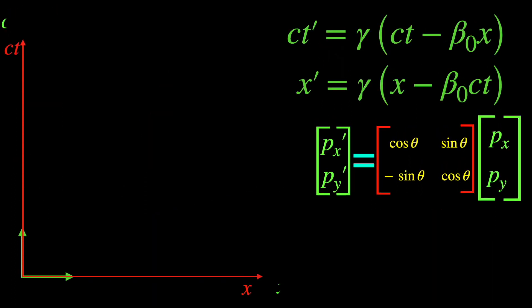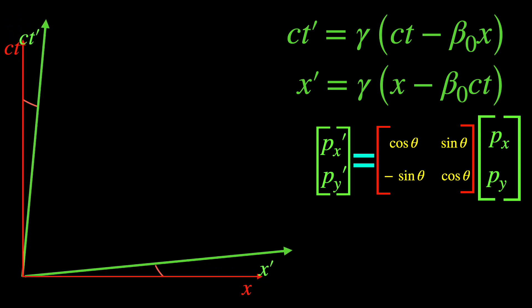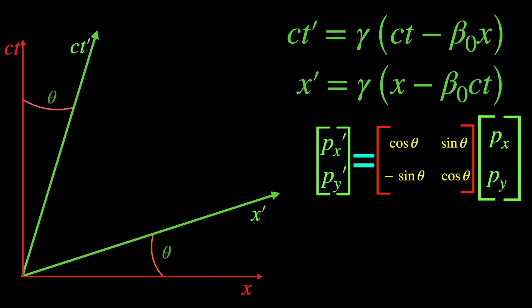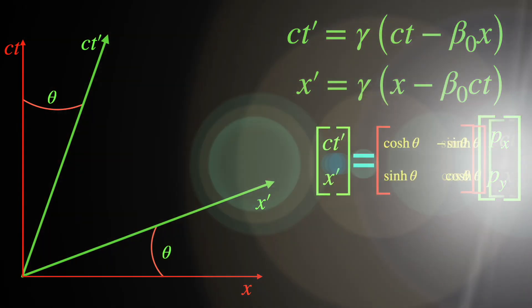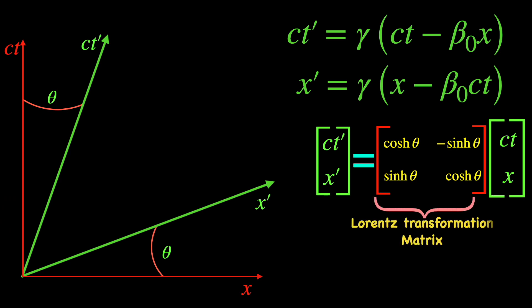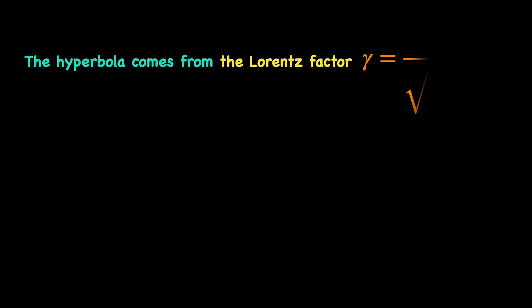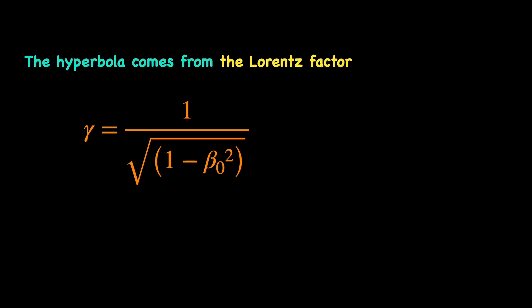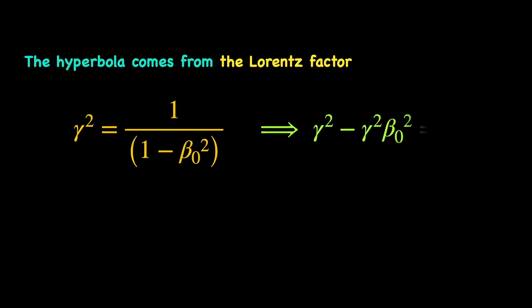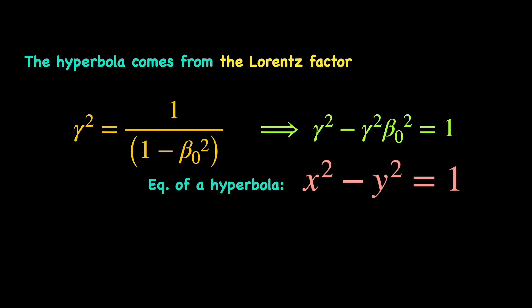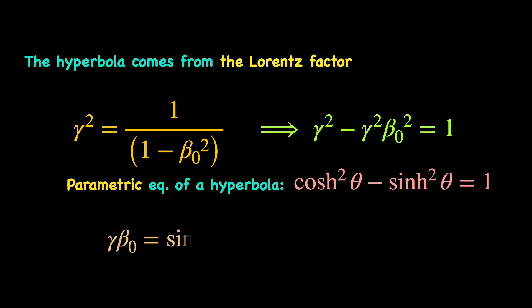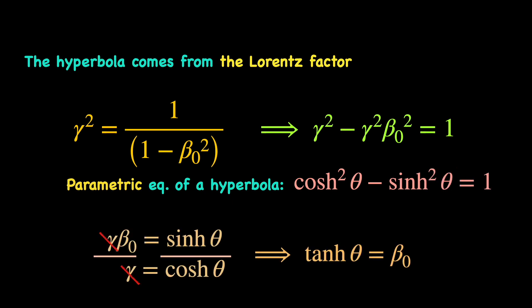With Lorentz transformations, there is this subtle difference that the angle of rotation is associated not with a unit circle, as in the case of usual rotations, but with a hyperbola, and the Lorentz transformation matrix is made of hyperbolic functions instead of trigonometric ones. To see where the hyperbola comes from, just look at the definition of the Lorentz factor. Squaring it, we see that gamma and gamma-beta behave as the two variables in the equation of a hyperbola. The hyperbola being a one-dimensional curve can be parametrized with a single parameter, the hyperbolic angle — let's say theta — so tanh(θ) is β₀. This means the constant relative velocity between the two frames determines the hyperbolic angle.